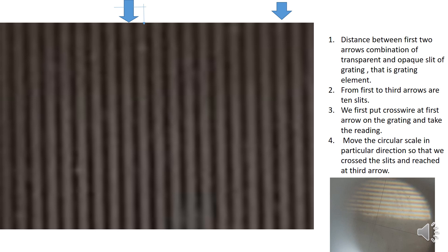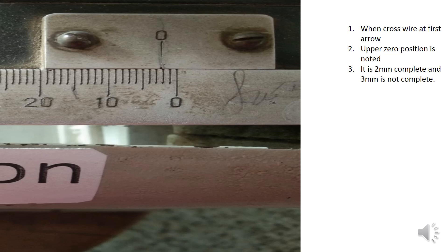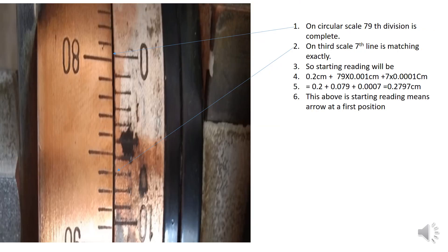We will try to find the distance for ten such combinations. We will put the cross-wire first at this arrow and note the reading, then move the cross-wire to the second position and note that reading. When the cross-wire is in the first position, you can see here: 2 mm is complete, 3 mm is not complete — so we read 2 mm on the main scale.